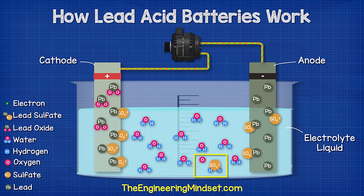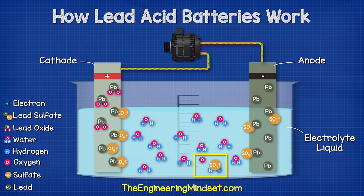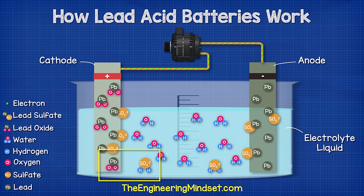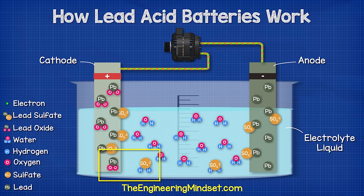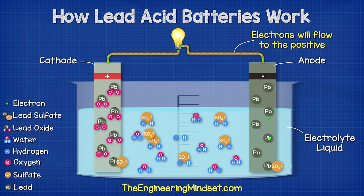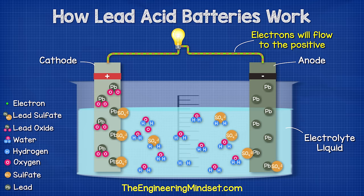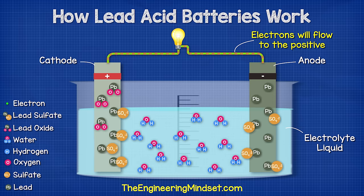This releases the oxygen ions and so the electrolyte acid becomes stronger. The oxygen ions combine with the lead to create lead oxide, and this releases the sulfate back into the electrolyte making it even stronger. If we were to leave the battery to fully discharge for too long or too many times, it becomes very difficult to reverse the chemical reaction.